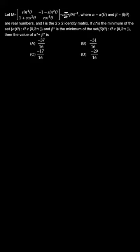For the given question, we have a relation between M and alpha, beta. We need to find alpha asterisk plus beta asterisk, where alpha asterisk is the minimum value of alpha and beta asterisk is the minimum value of beta. To proceed, we will first write the determinant of M.